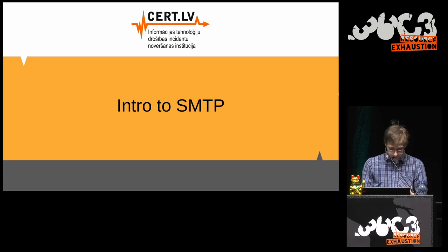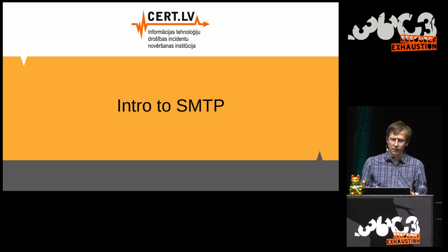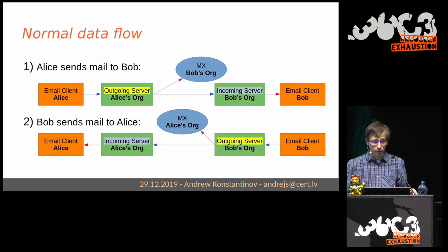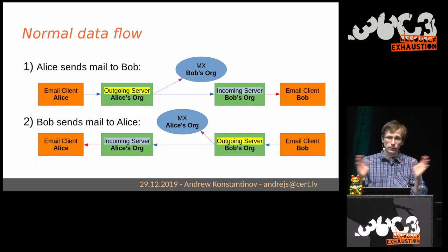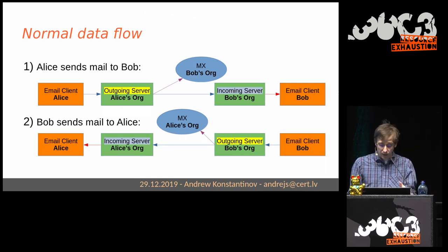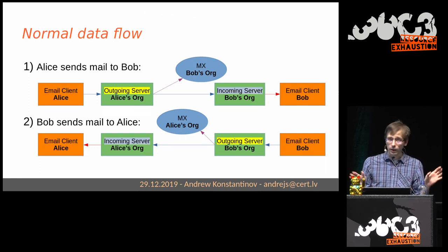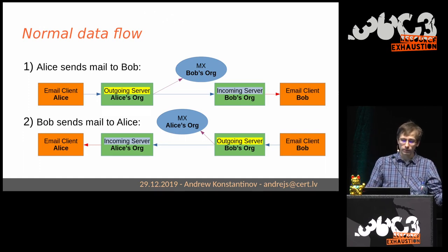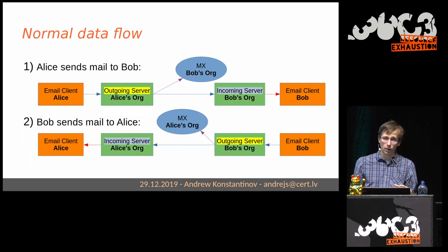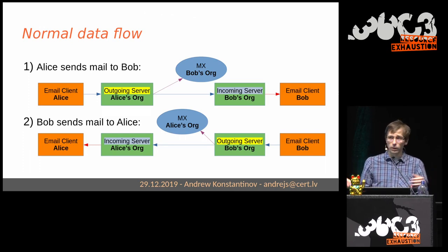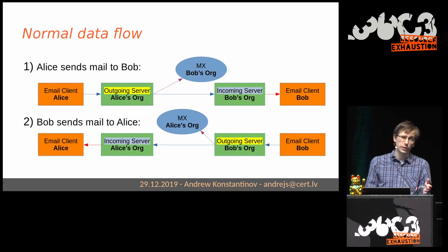Now let's talk about the technical stuff. We'll start with a short introduction to SMTP, the protocol that underlies all email communications. Here's the data flow when one person sends email to another — for example, Alice sending to Bob, using different domains. Both use email clients such as Outlook or Thunderbird. Alice's email goes via SMTP to Alice's outgoing mail server. Important to note: most organizations have two types of servers — one for incoming and one for outgoing. As a penetration tester, you need to check both, as they will have different configurations.